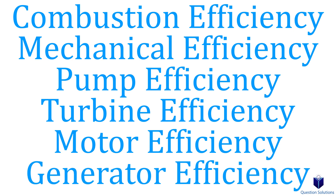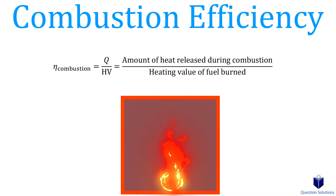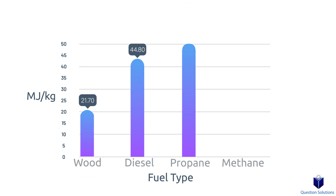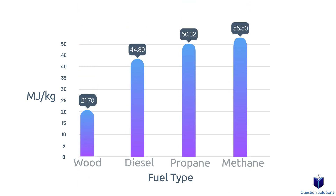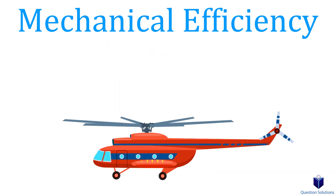Diving a bit deeper, we have different types of efficiencies. The first is combustion efficiency — that's the amount of heat released during combustion divided by the heating value of the fuel burned. The heating value of a fuel is the amount of heat released when a unit amount is burned at room temperature and the combustion products are cooled back to room temperature. If we achieve 100% combustion efficiency, the fuel is burned completely and the gases leave the combustion chamber at room temperature, meaning the heat released equals the heating value of the fuel.